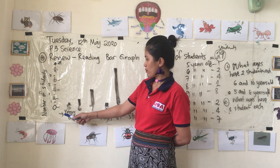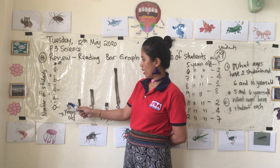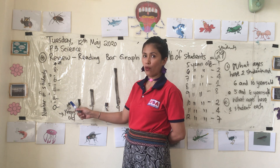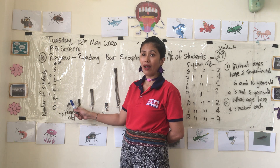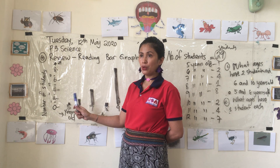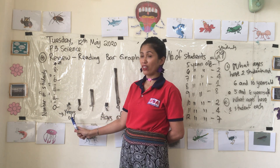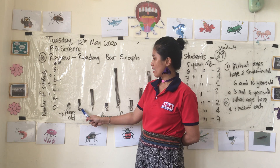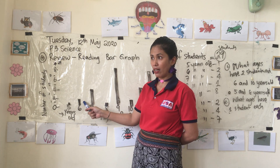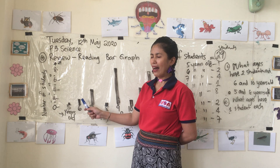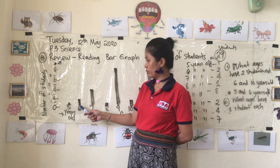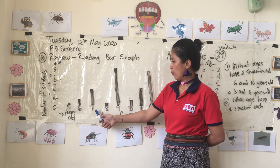So out of 29 students, how many of them are five years old? The line or the bar is in between zero and two, so we know there is only one student who is five years old. How about six years old? Out of 29, there are two students who are six years old.